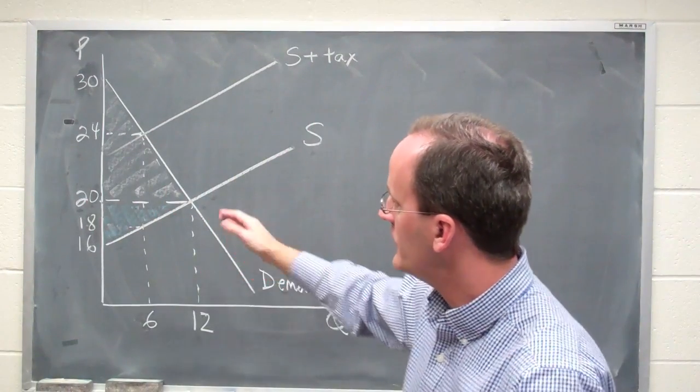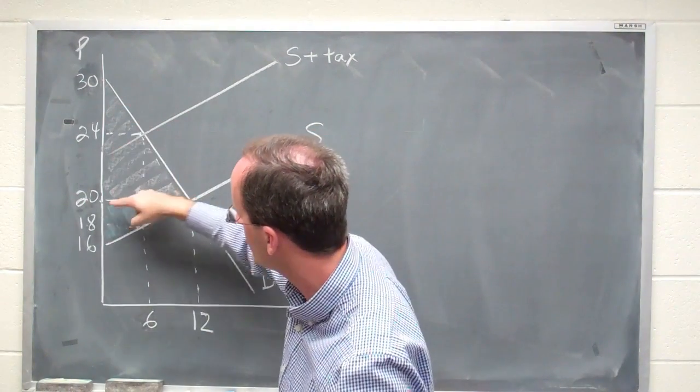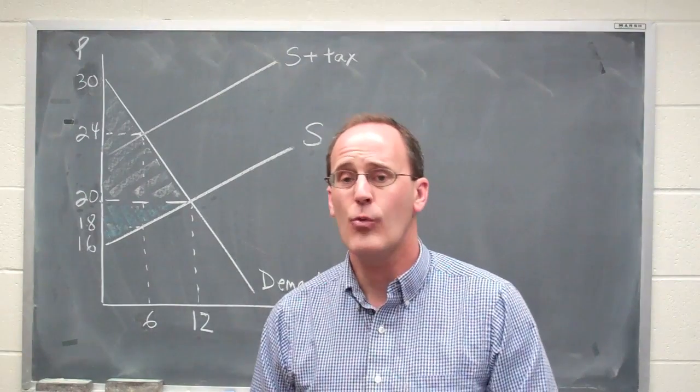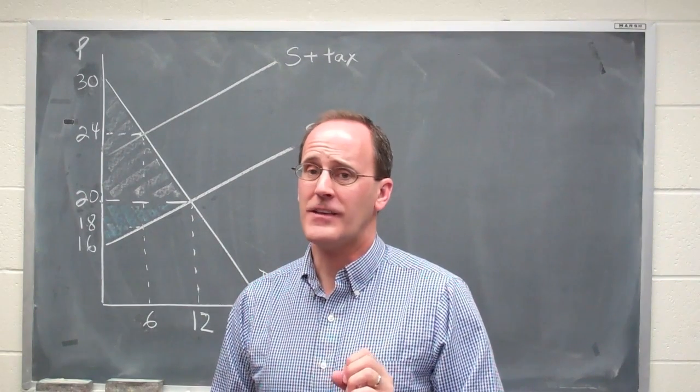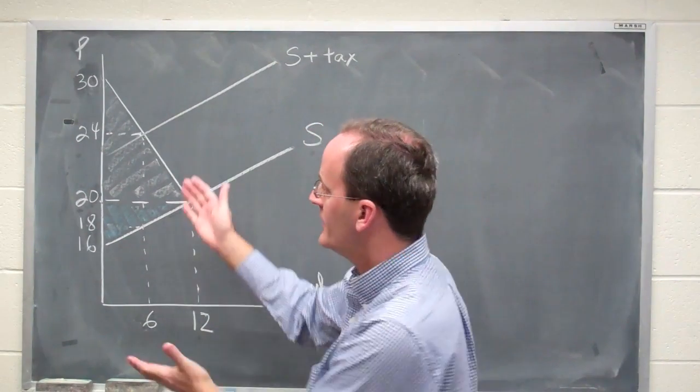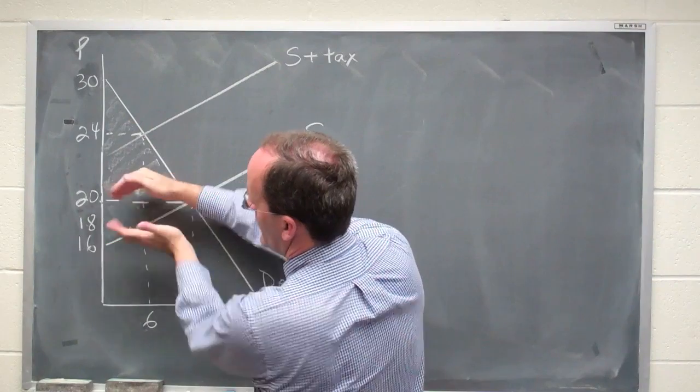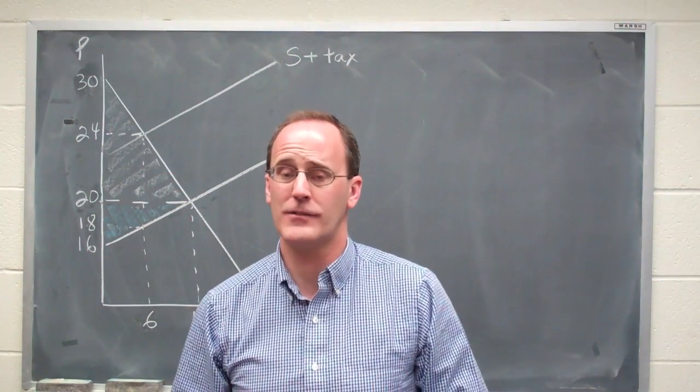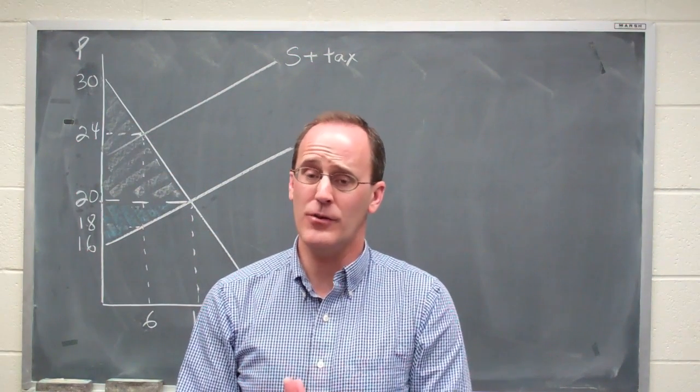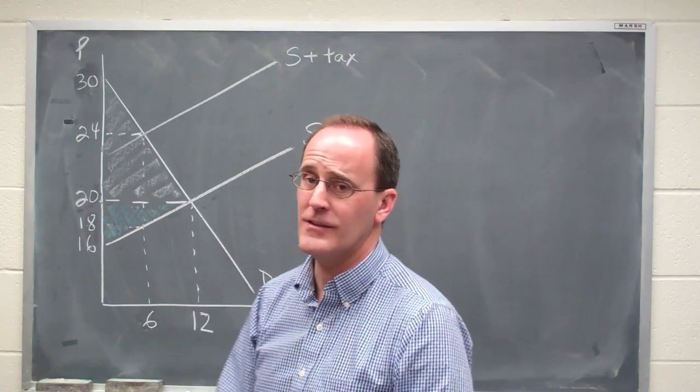In this case you can see the consumer surplus is greater than the producer surplus. What we're interested in here is asking what happens to the size of these two different areas, and also we want to ascertain what the amount of government revenue is, the deadweight loss from the tax, and then finally the incidence.